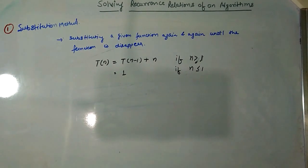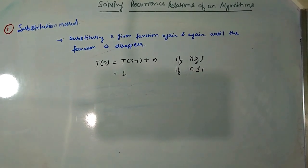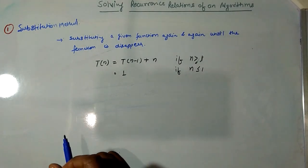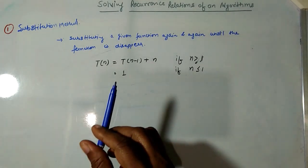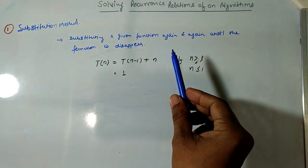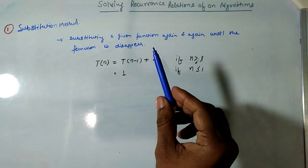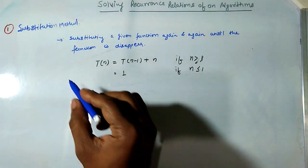In this video we will learn how to solve the recurrence relation of an algorithm using the substitution method. The substitution method is nothing but substituting a given function again and again until the function disappears.